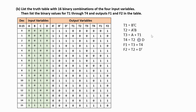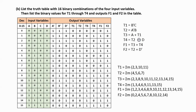Now we write the minterm numbers for all these boolean functions from the obtained truth table. Here t1, t2, t3, t4, f1, and f2 are written in SOP (sum of products) form. We write the minterm numbers for output values equal to 1.